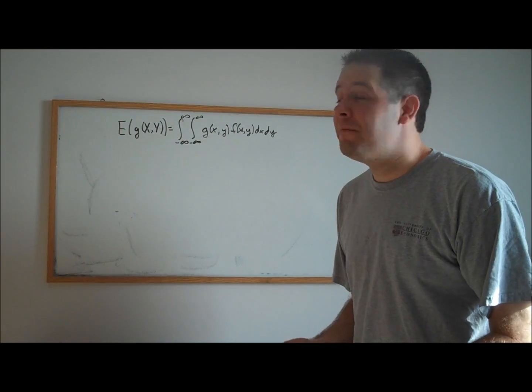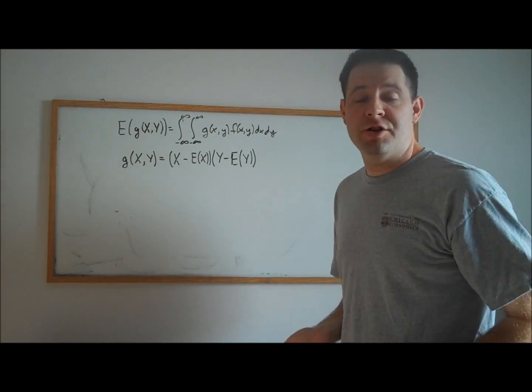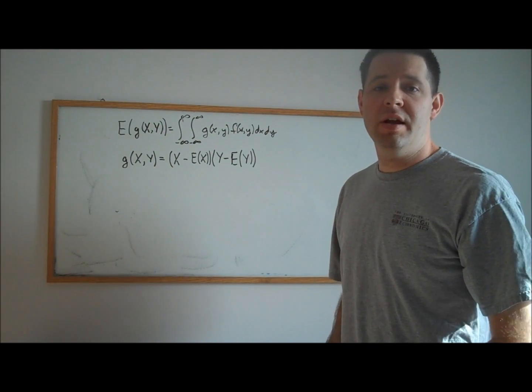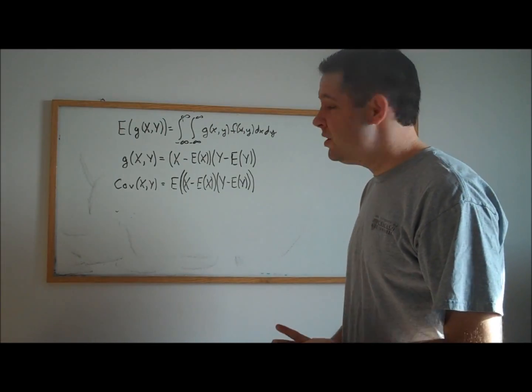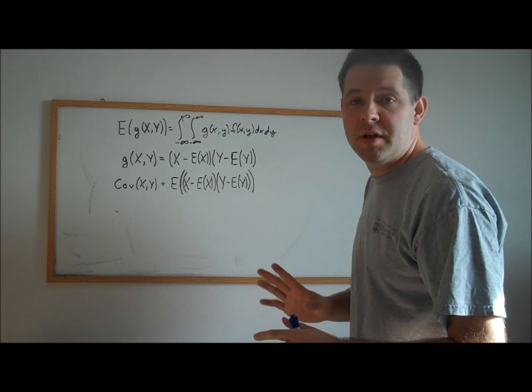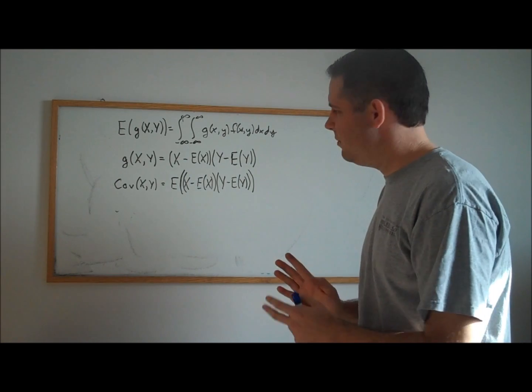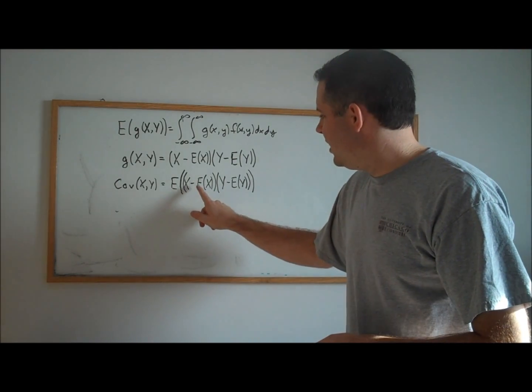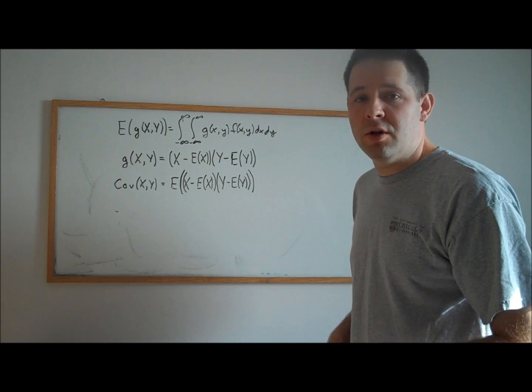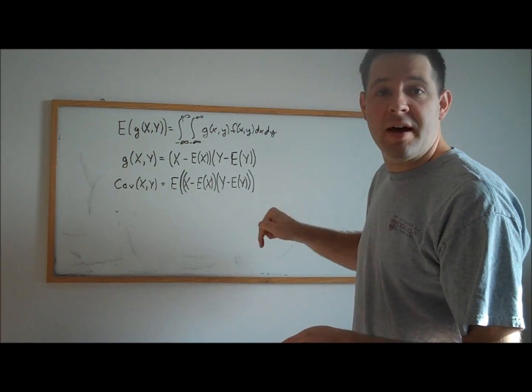Now let's consider one such function of this random vector. When we use this function, the resulting expectation is the covariance between X and Y. The repeated use of expectations in there is cumbersome, so we can denote the expectation of a random variable as the Greek letter mu sub that random variable.